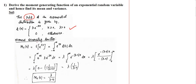Let me derive the moment generating function of exponential distribution. The formula for the moment generating function is M_X(t) = E[e^(tx)], that is, the integral from minus infinity to plus infinity of e^(tx) · f(x) dx. Since f(x) = λe^(−λx) and the limits are x ≥ 0, we can replace it with the integral from 0 to infinity of e^(tx) · λe^(−λx) dx.